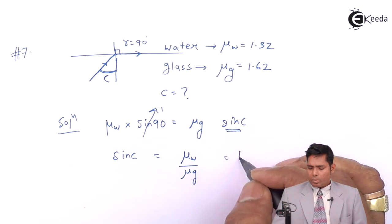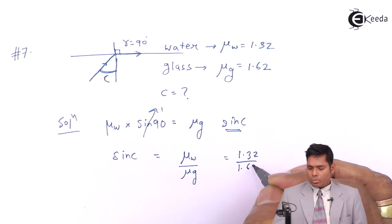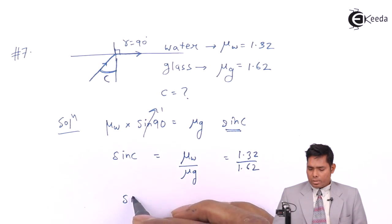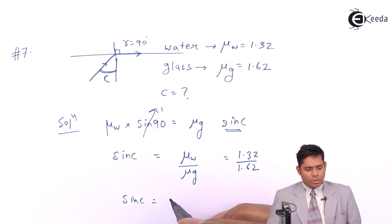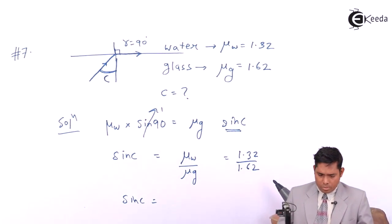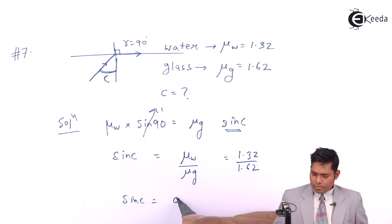1.32 divided by 1.62. Sin C is this value, which I hope that you will solve, is 0.8148.